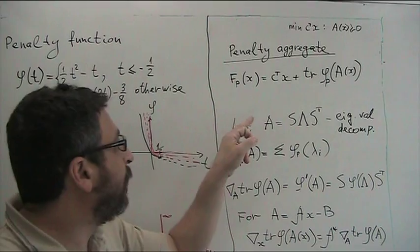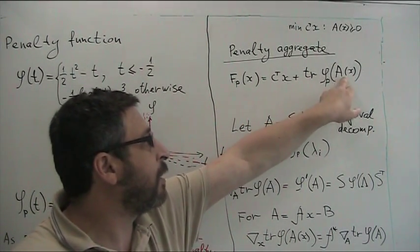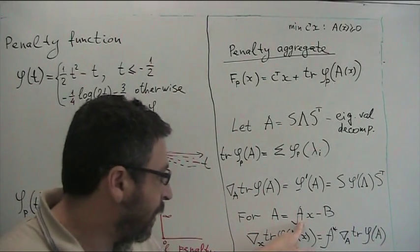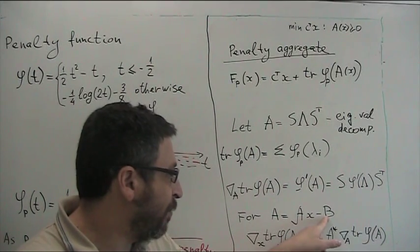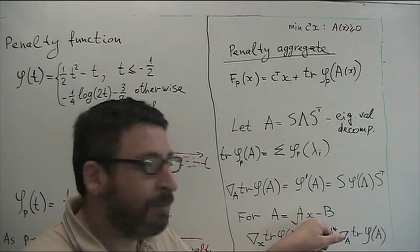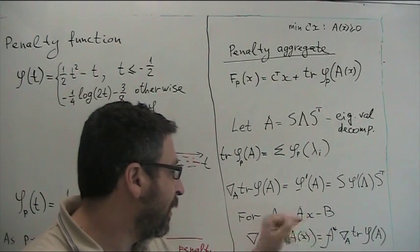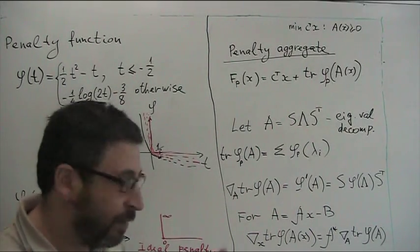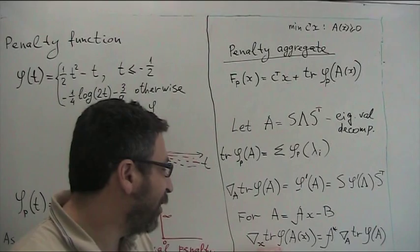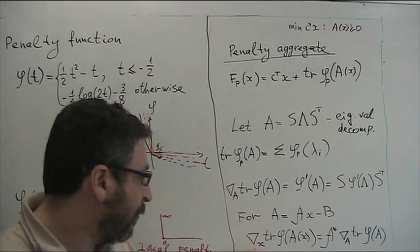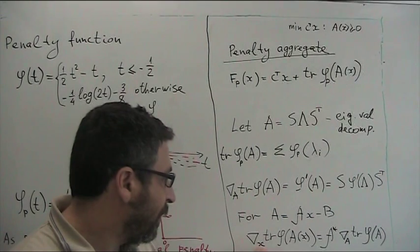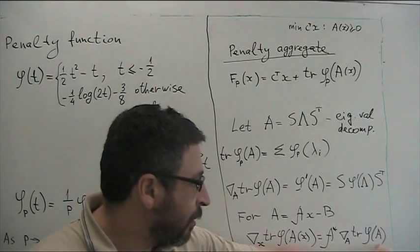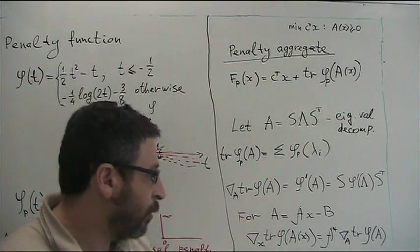We need the gradient of our penalty with respect to x. When A equals calligraphic A(x) minus B — a linear map from vectors to symmetric matrices — the formula for the gradient with respect to x is obtained by applying the adjoint of A to the gradient of our function with respect to A.